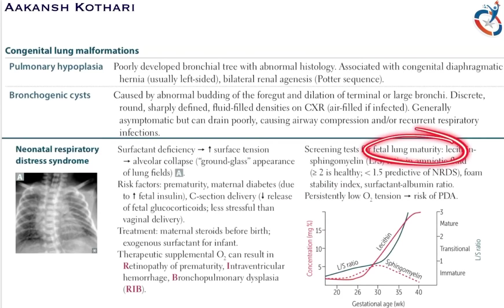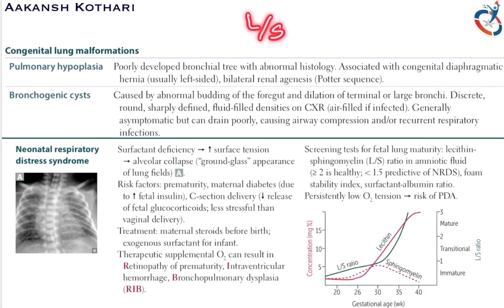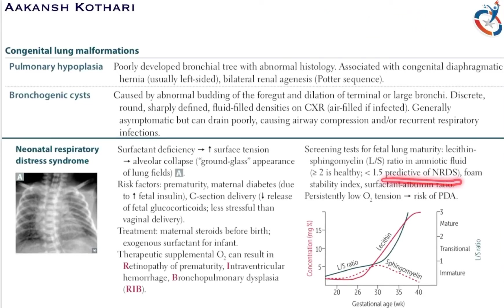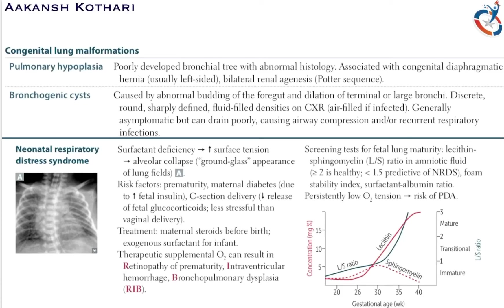The major screening test for fetal lung maturity is the lecithin-to-sphingomyelin (L:S) ratio. Lecithin levels increase continuously while sphingomyelin peaks at week 30 then falls. An L:S ratio greater than 2 indicates a healthy lung, while a ratio less than 1.5 is predictive of NRDS. Other tests include the foam stability index and surfactant-albumin ratio.